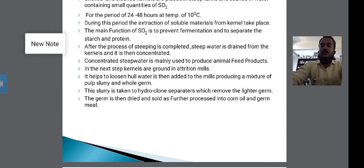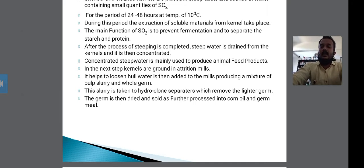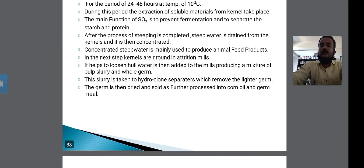The concentrated steep water is mainly used to produce the animal feed product. In the next step, the kernels are ground in an attrition mill.